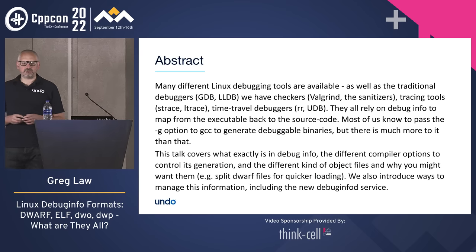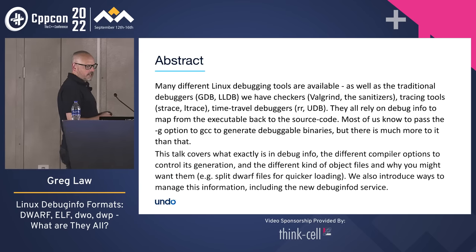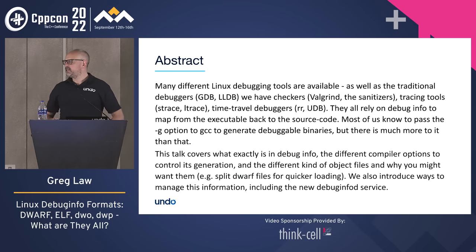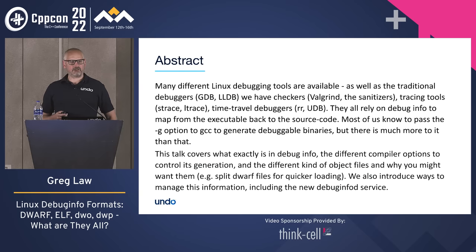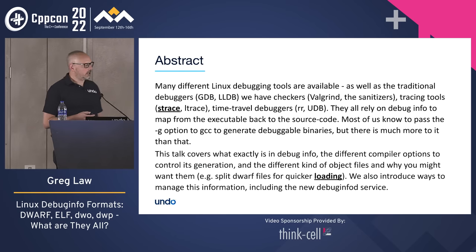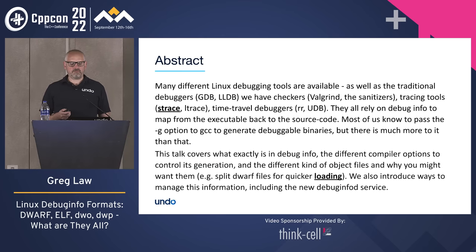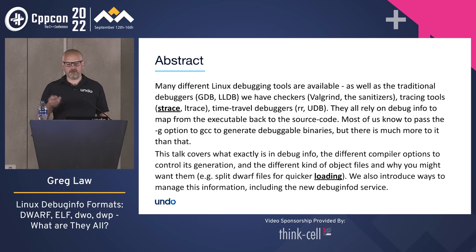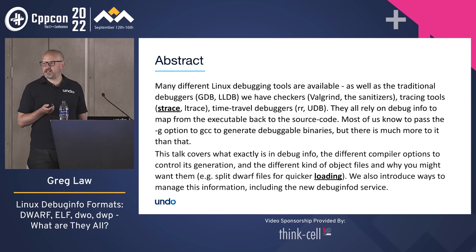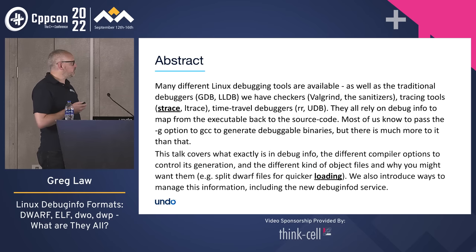I wrote the abstract and then thought to go and learn it. After figuring out what I was going to talk about, I came back and checked the abstract and realized I'd made a couple of mistakes. I said that many different debugging tools rely on debug information, including GDB, LLDB, Valgrind, RR, UDB, and strace. Well, strace doesn't need the debug info — it just uses ptrace and intercepts system calls. So that was a bit of an oops.